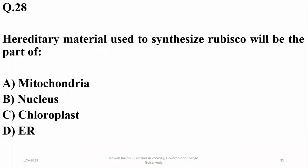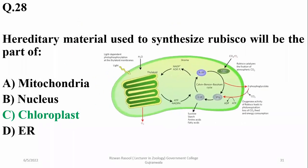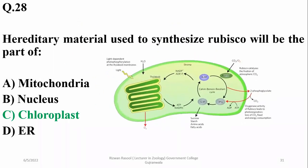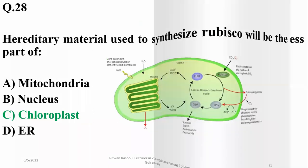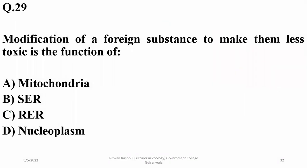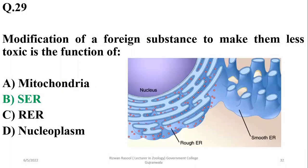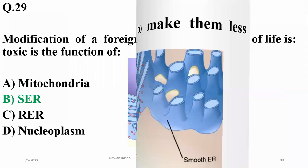Question 28: The hereditary material used to synthesize Rubisco will be part of the chloroplast. Rubisco is a chloroplast enzyme and its synthesis is a part of the chloroplast. Right option is chloroplast. Question 29: Modification of foreign substances to make them less toxic is a function of smooth endoplasmic reticulum, which performs detoxification.